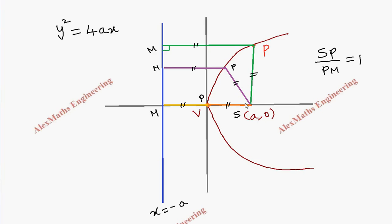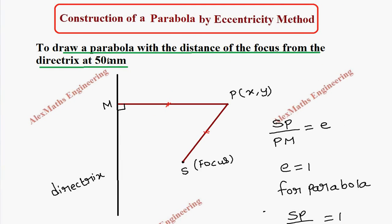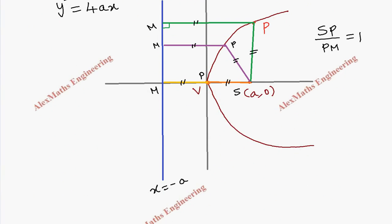Keeping this as a basis, we are going to start the construction. We have to draw the parabola with the distance of the focus from the directrix at 50 mm. Since the vertex V is the midpoint between the focus and the directrix, this means each part is 25 mm — 25 mm from the directrix to the vertex, and 25 mm from the vertex to the focus.